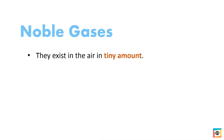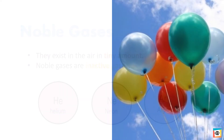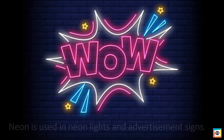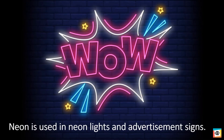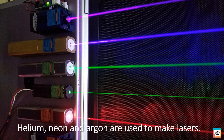Noble gases are found in the air in tiny amounts. Noble gases are inactive gases. Helium, neon, and argon are the noble gases found in air. Helium is used to fill airships and balloons. Neon is used in neon lights and advertisement signs. Argon is used to fill light bulbs. Helium, neon, and argon are also used to make lasers.